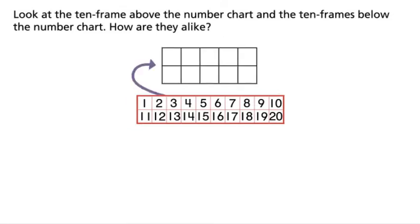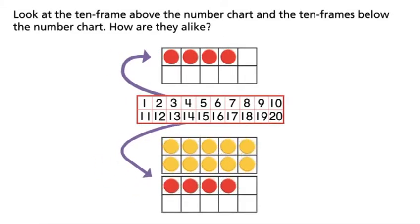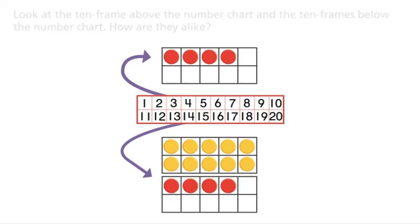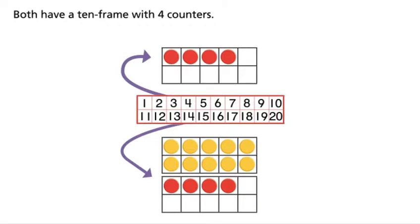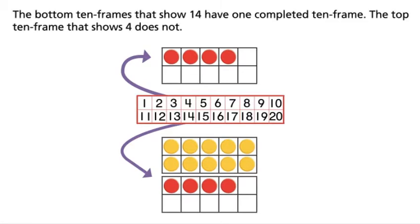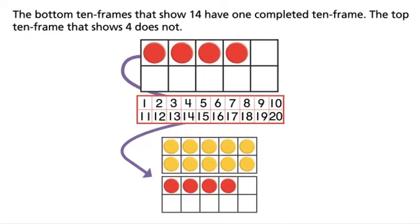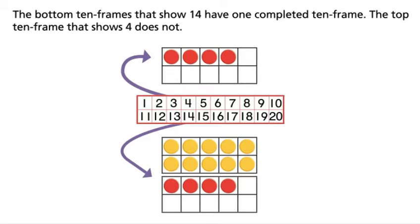Look at the 10-frame above the number chart and the 10-frames below the number chart. How are they alike? Both have a 10-frame with four counters. How are they different? The bottom 10-frames that show 14 have one completed 10-frame. The top 10-frame that shows four does not.